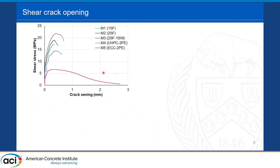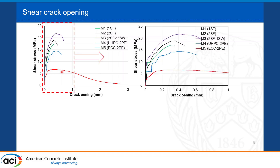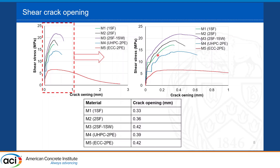The shear stress versus crack opening results show that ECC was the most ductile material. However, for the other four UHPCs, focusing on deformations up to 1 mm, all of them showed very similar behavior regardless of whether they are strain softening or strain hardening under tension. Under pure shear, all showed very similar behavior, and the crack opening corresponding to peak shear strength is almost the same across all mixes.